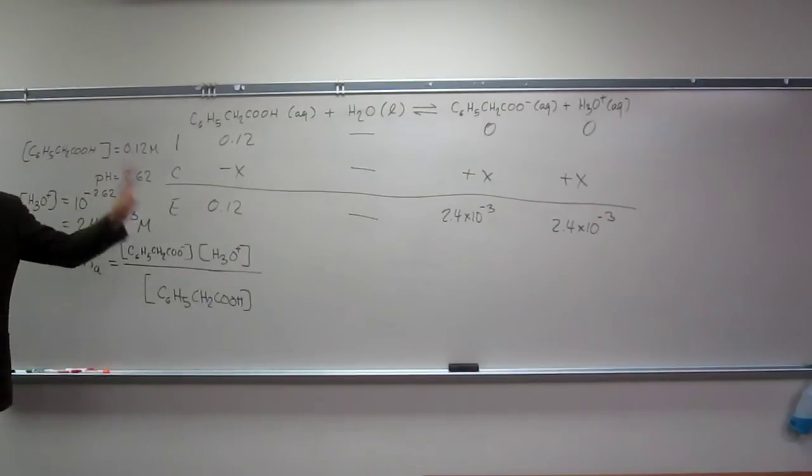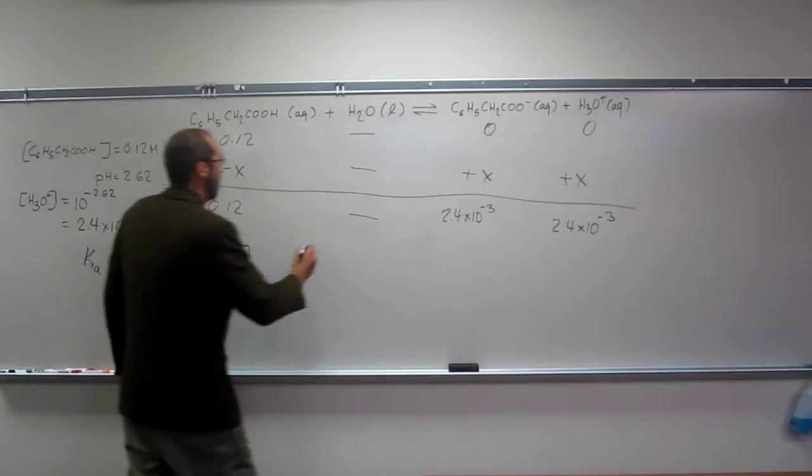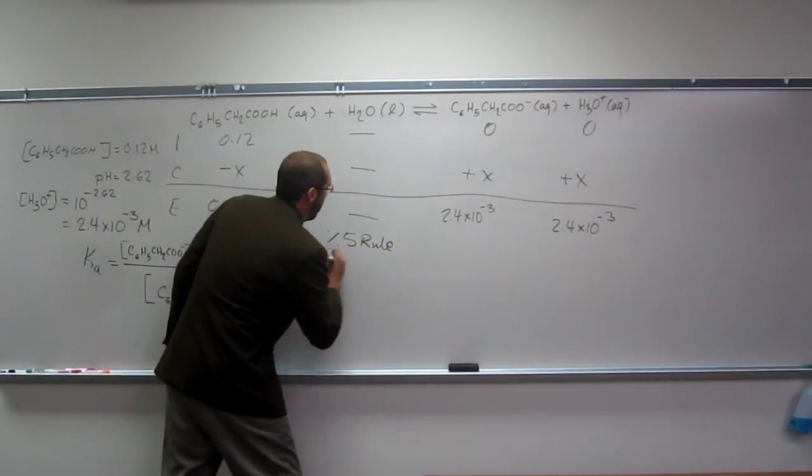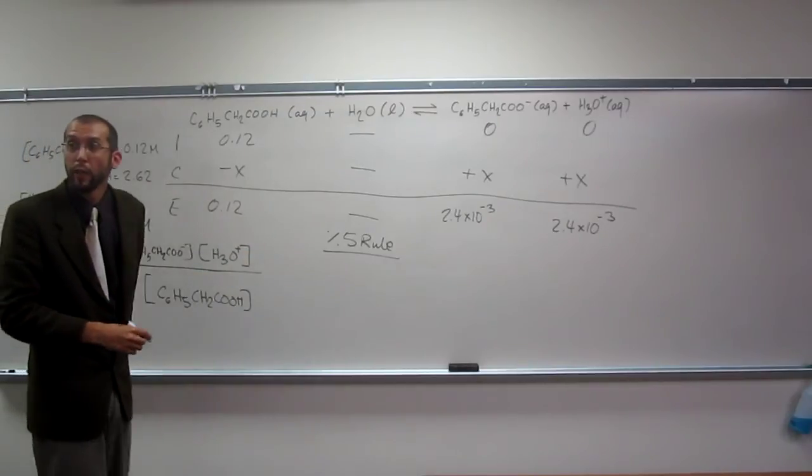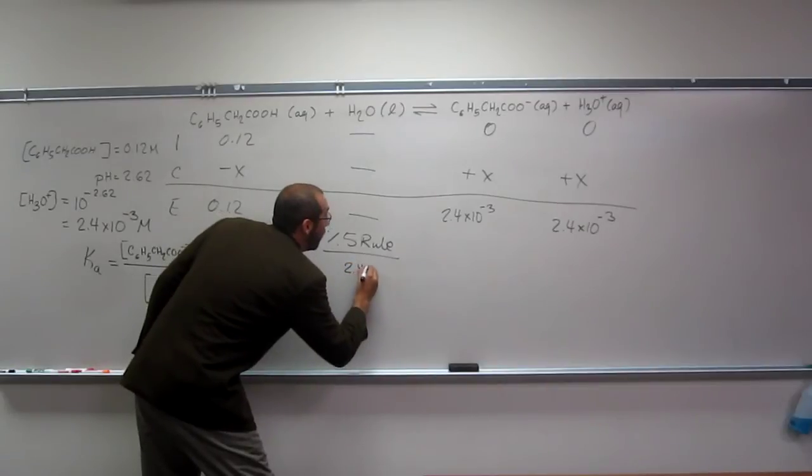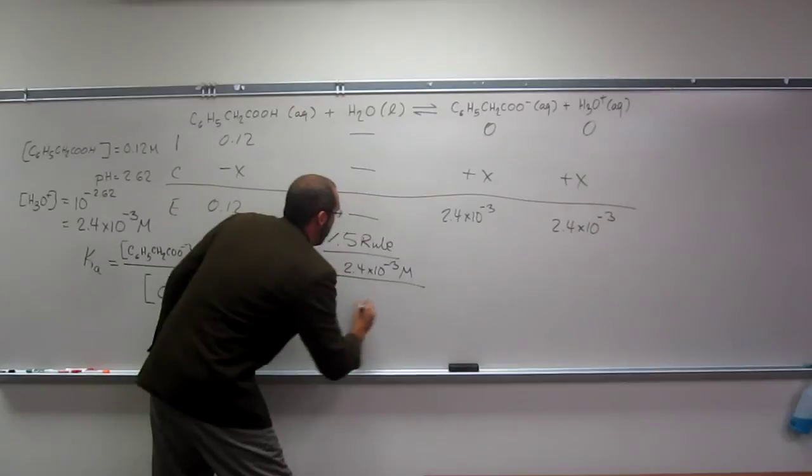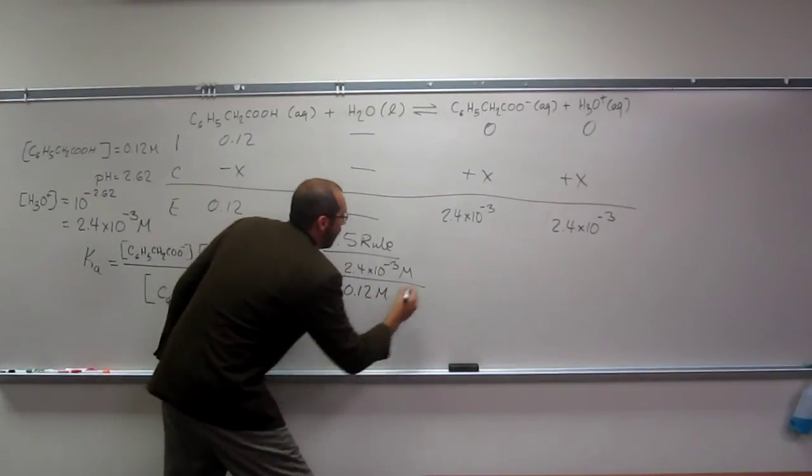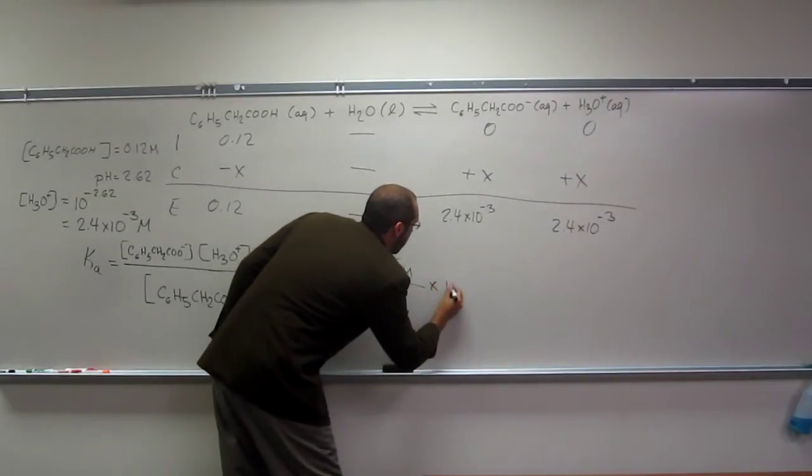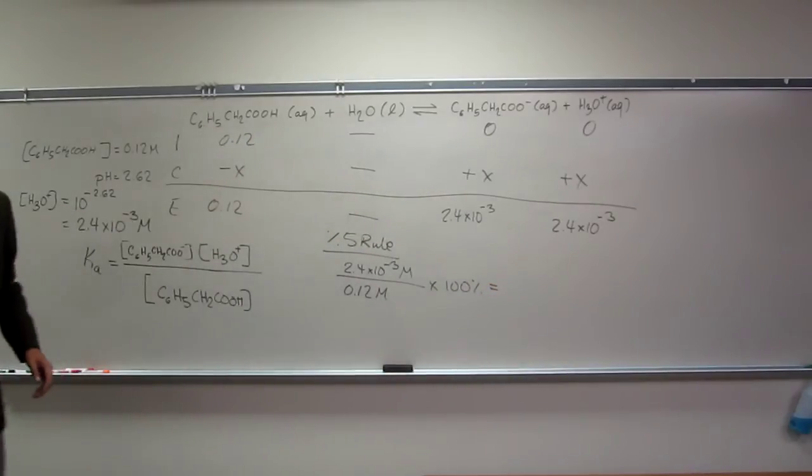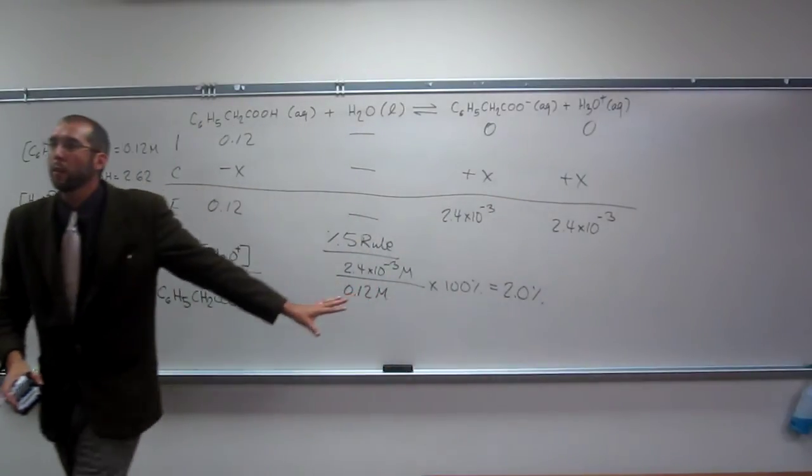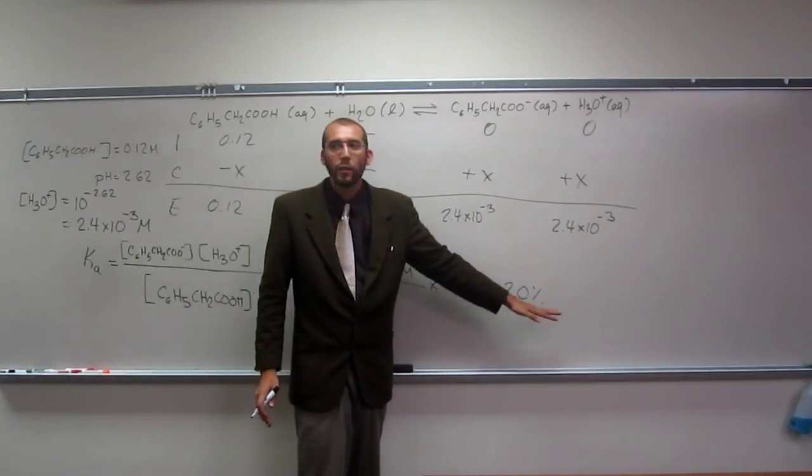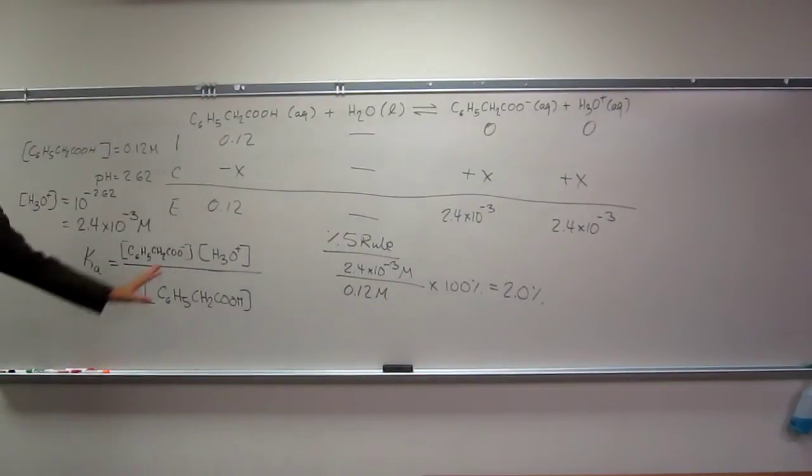So, let's do the 5% rule right now just to justify what we're doing. Remember the 5% rule is going to be this divided by the initial concentration, X divided by the initial concentration times 100%. So, divide it by 0.12 times 100. And I get 2.0%. So, is it okay that we use this assumption? Yes. If this is greater than 5%, then we can't do that. But since it isn't, we can do this.